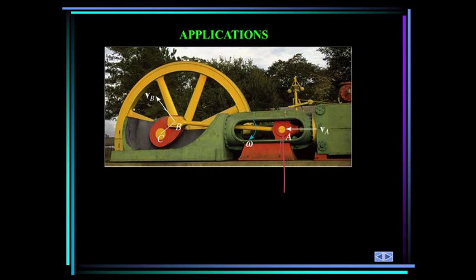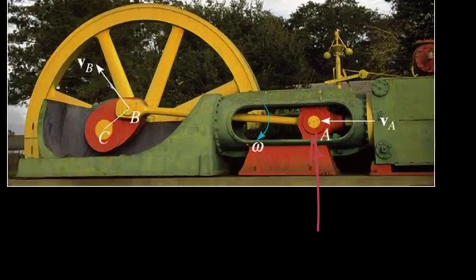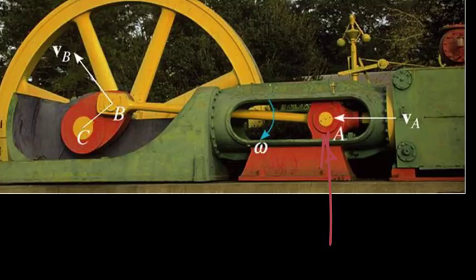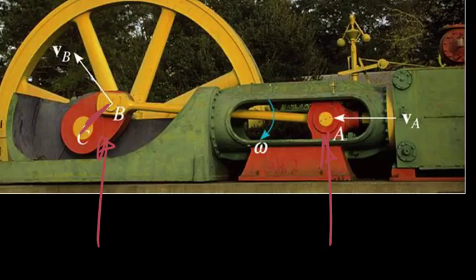As this slider block at A moves horizontally to the left with some velocity v sub A, it will cause the link CB to rotate counterclockwise. Thus, the velocity of B is directed tangent to the circular path, so it will be tangent to CB. Which link is undergoing general plane motion — A,B or B,C?